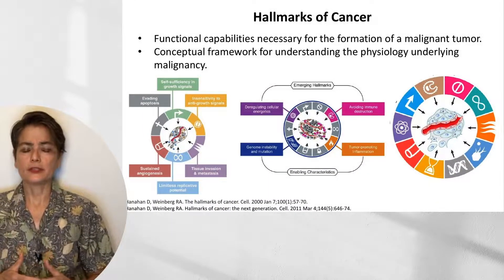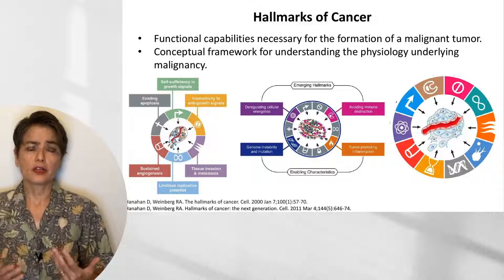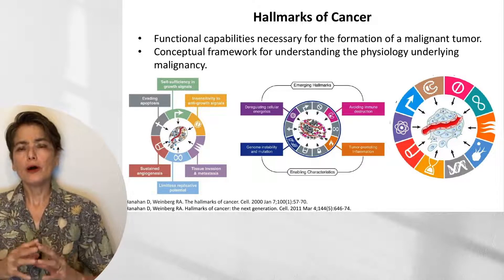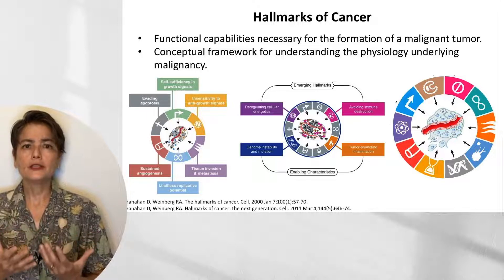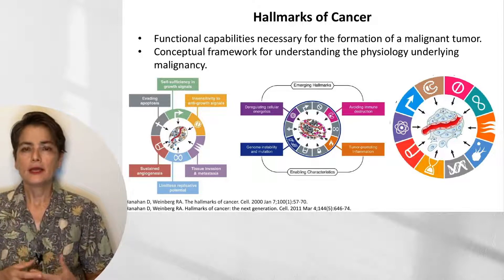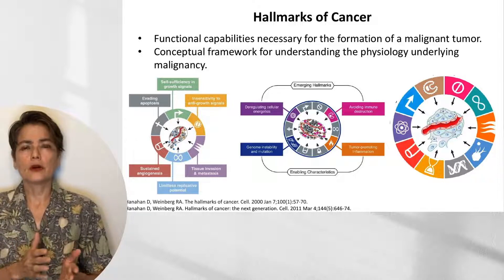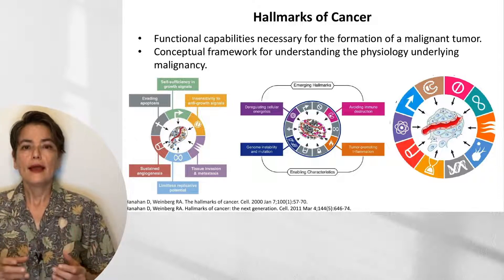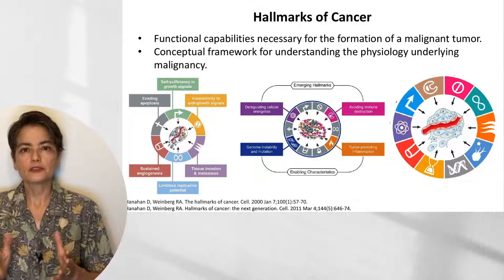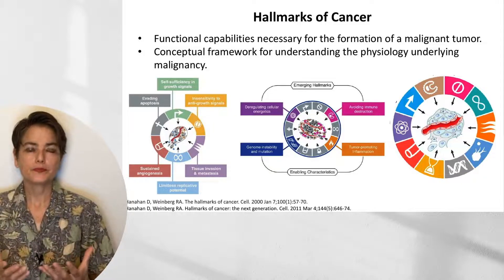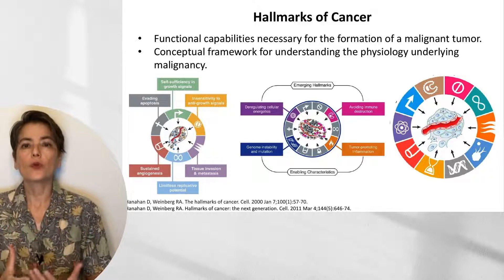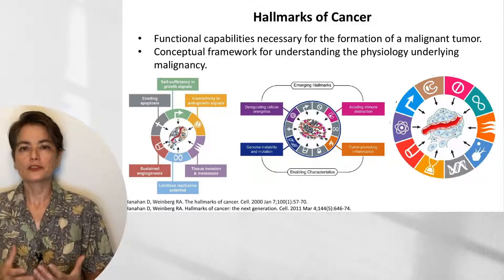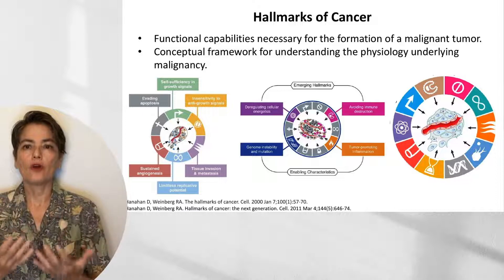What are these hallmarks of cancer? They're a concept that has been evolving over the last 22 years. Back in 2000, Hanahan and Weinberg wrote a paper providing a framework to understand the physiology underlying malignancy. As you study, you'll learn details about many malignancies — lung cancer, skin cancer, melanoma, leukemias, lymphomas — and you might get so focused on each that you miss the big picture: what do all malignancies need in order to survive and succeed as malignant tumors?